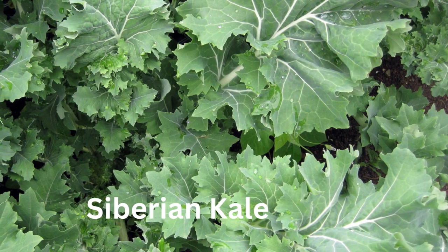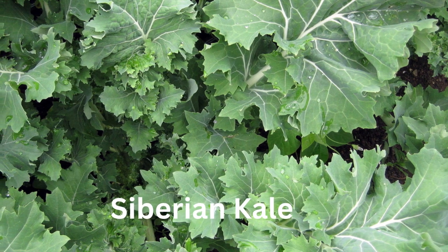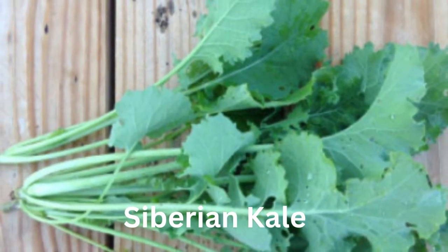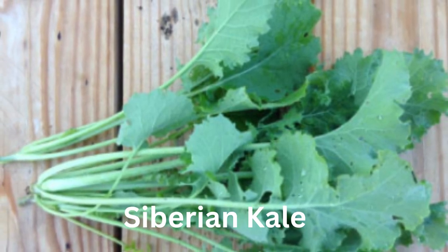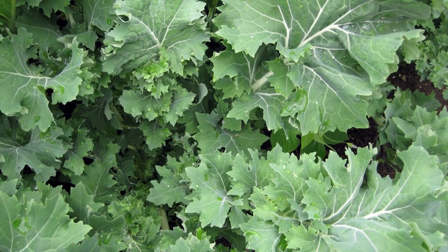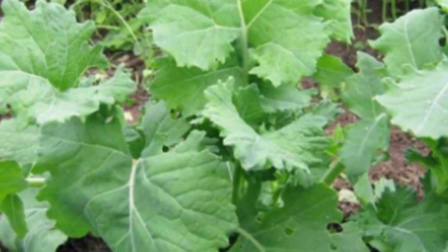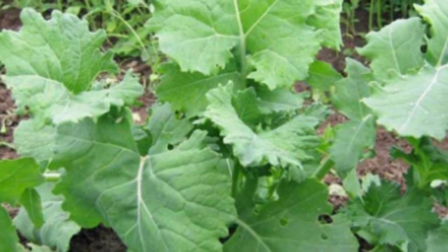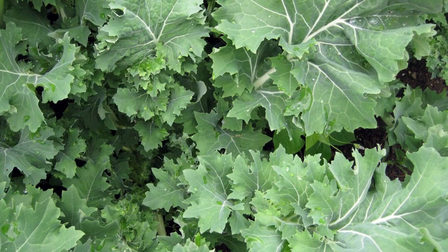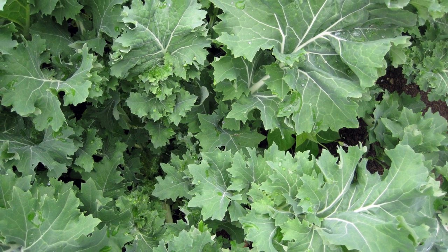Number 6: Siberian Kale. Siberian kale, also known as Russian kale or Siberian blue kale, has frilly, deeply lobed leaves that are bluish-green in color. The leaves are slightly textured and have a ruffled appearance. Compared to other kale varieties, the leaves of Siberian kale are broader and more rounded. It is less bitter and has a subtle earthy taste. It is versatile in the kitchen and can be enjoyed raw in salads, lightly cooked by steaming or stir-frying, or used in soups, stews, casseroles, or as a side dish.